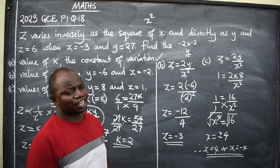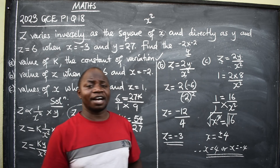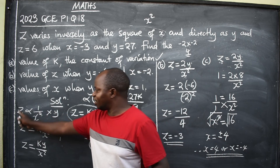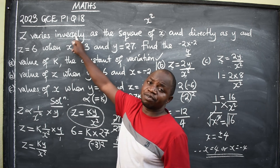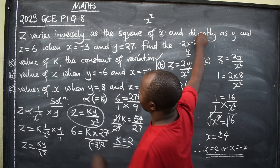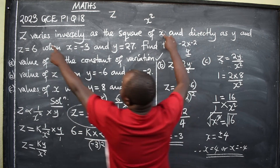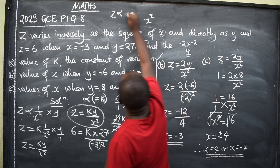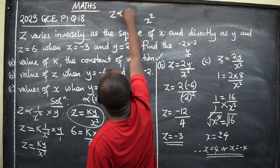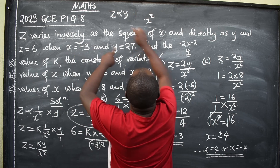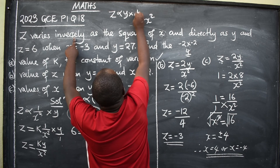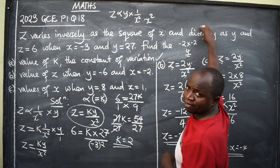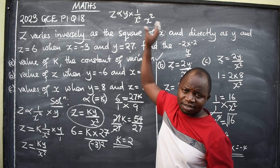This is the way a question on variation of this nature should be answered. Where you need to be very careful is in the translation. Sometimes the question can start differently — for example, 'Z varies directly as Y and inversely as the square of X.' The order may vary, so don't get confused when translating. Be very careful.